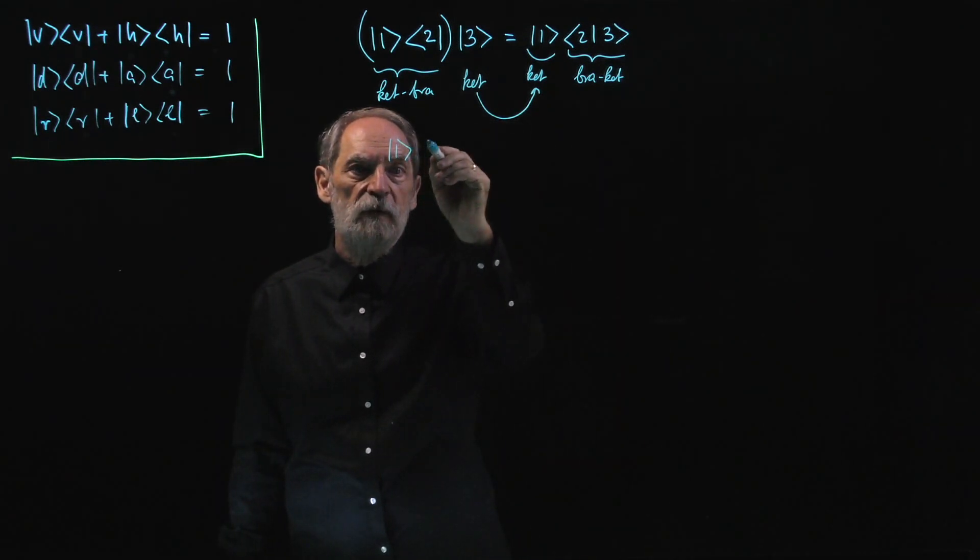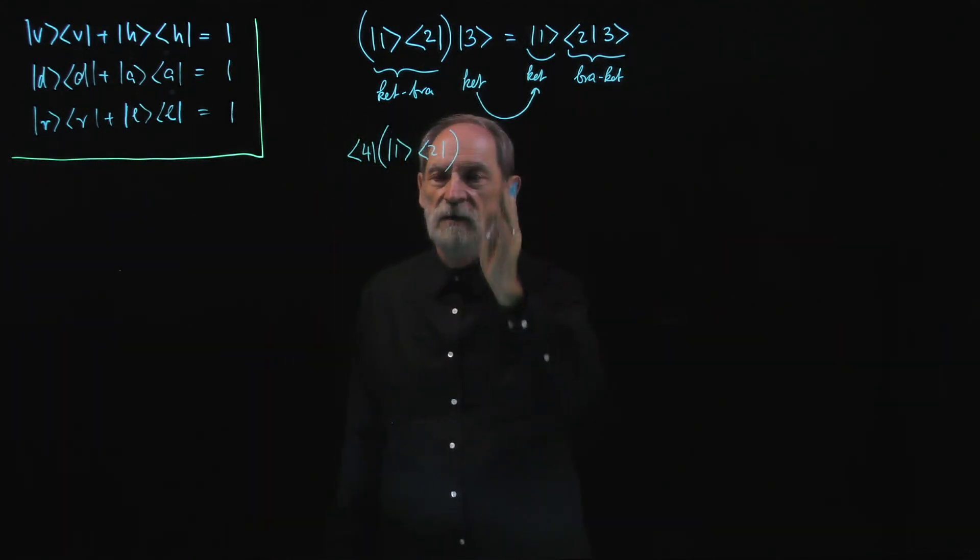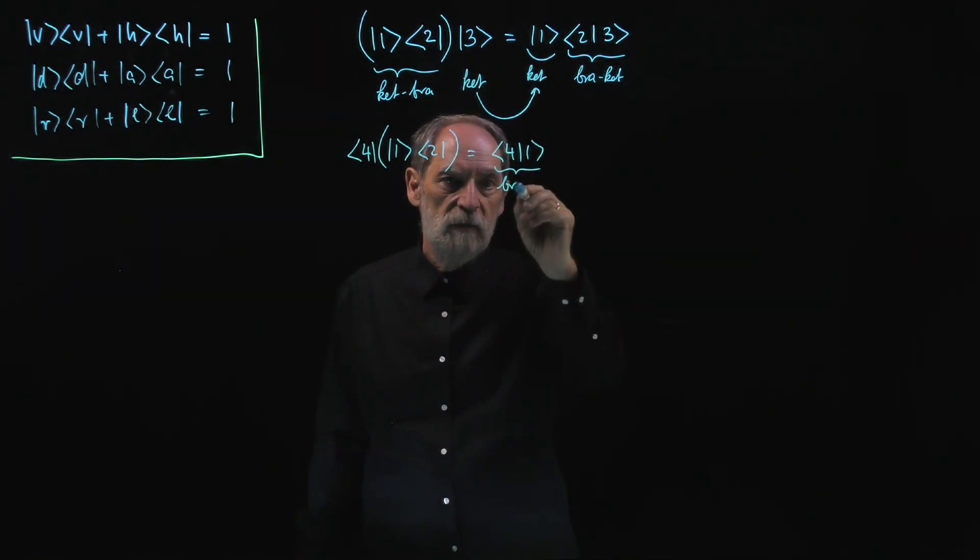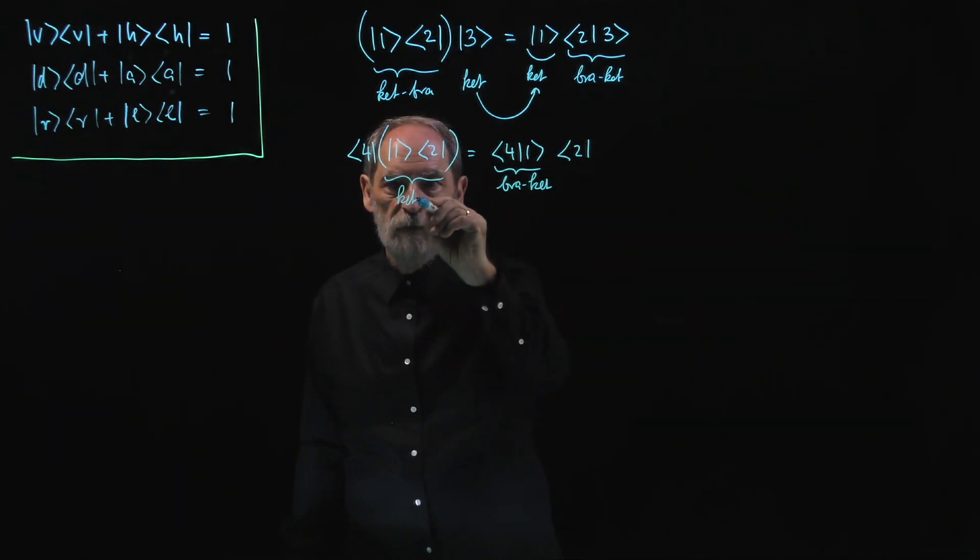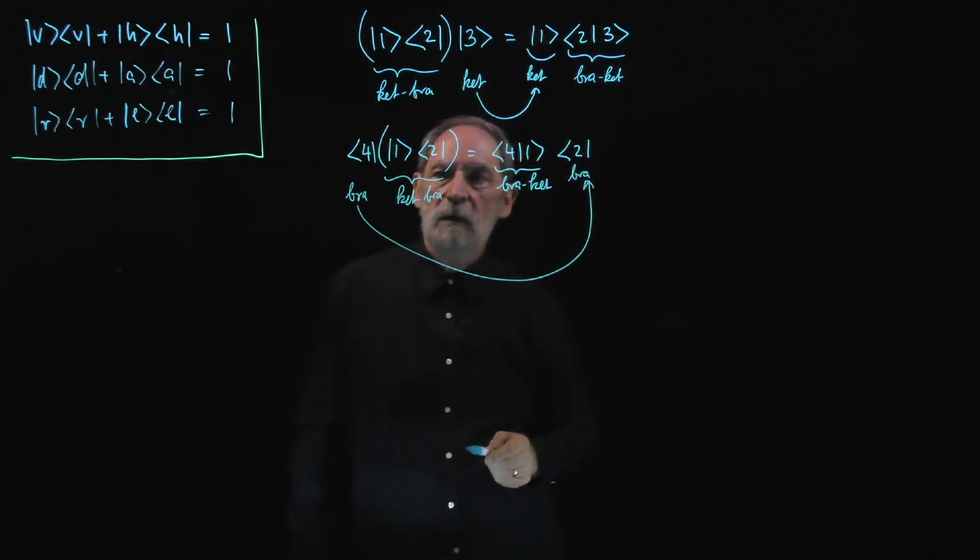What if I start with the ket-bra, but now I apply it to a bra, and that naturally has to stand on the left. So again, I can multiply any way I like. So here we now combine the bra-4 with the ket-1 into a bra-ket. And we are left with the bra-2. So here we have the ket-bra, the same ket-bra as above. But now, it maps a bra onto another bra.